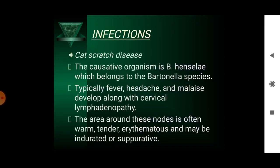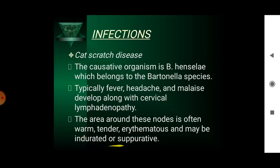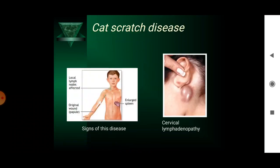Cat scratch disease is caused by the organism Bartonella henselae, which belongs to the Bartonella species. Typically fever, headache and malaise develop along with cervical lymphadenopathy. The area around these nodes is often warm, tender, erythematous and may be indurated or suppurative. This is cat scratch disease — you can see the cervical lymphadenopathy here.